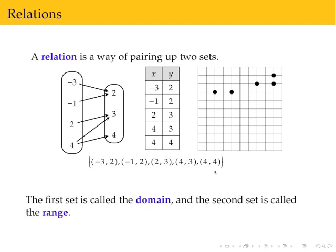The first set is called the domain, and the second set is called the range. So we can see that in each way of depicting this. We have the domain here, the domain is here, the domain is the set of first coordinates, it's the x values here. The second set is the range. And again, we can see that in each way of expressing it.